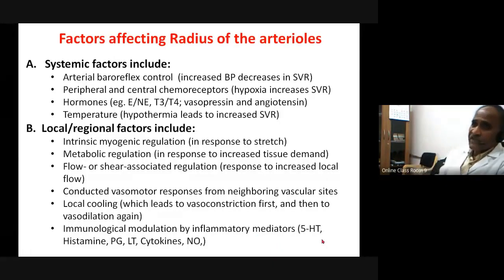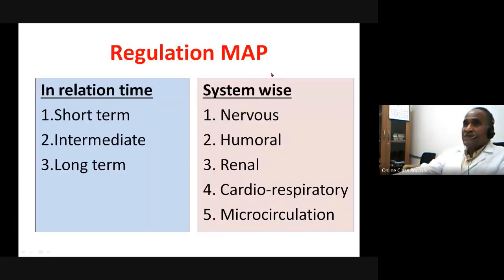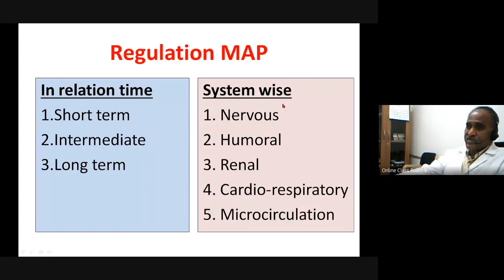Regulation of MAP happens in two frameworks: one in relation to time, and two in relation to various systems. Time-wise: short-term regulation (seconds to minutes), intermediate regulation, and long-term regulation. System-wise: regulation from the nervous system, hormonal/endocrine system, kidney, cardiorespiratory reflexes, and microcirculation — five main components.